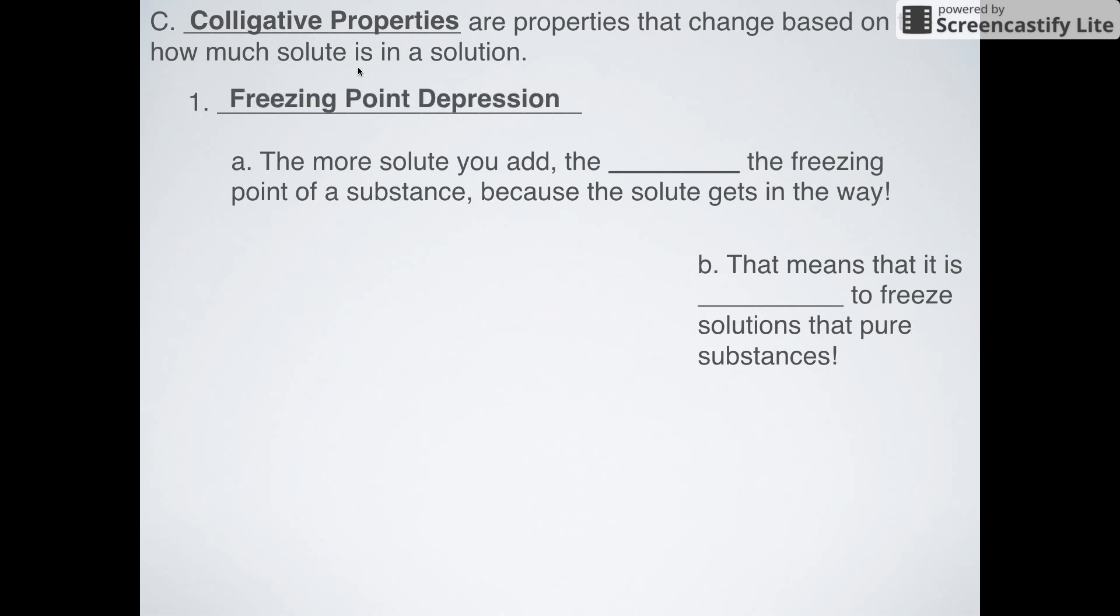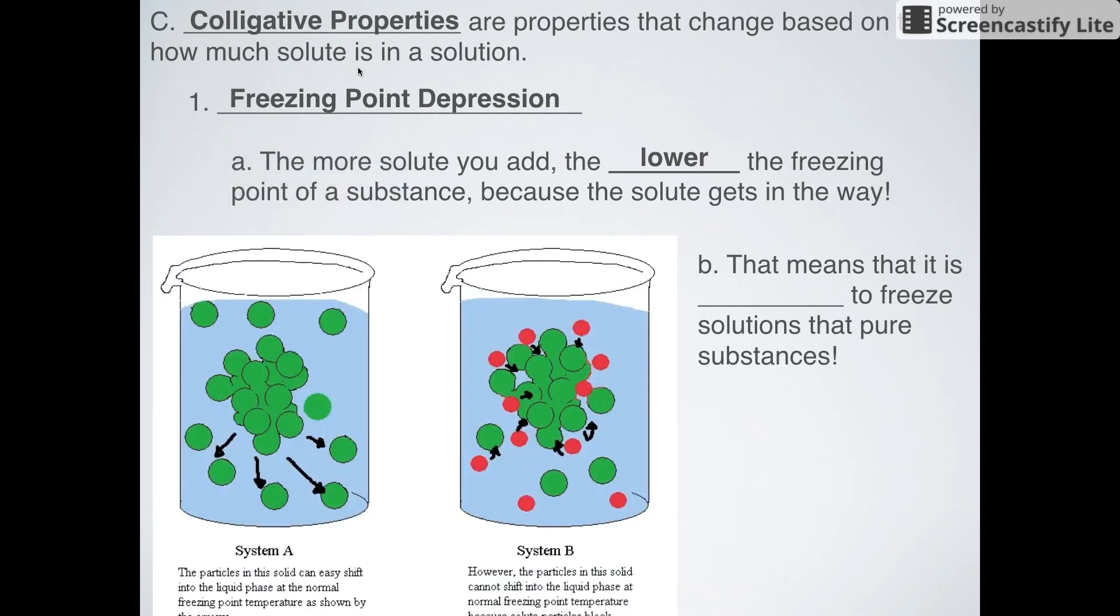The first colligative property is freezing point depression. When you hear depression, think going down. Things can stay liquid even though they're below freezing because of freezing point depression. The more solute you add, the lower the freezing point becomes.